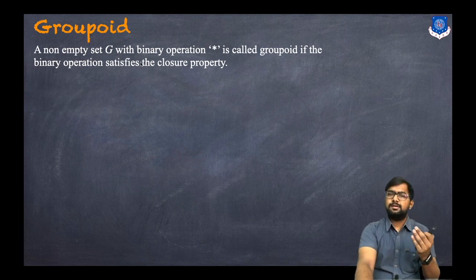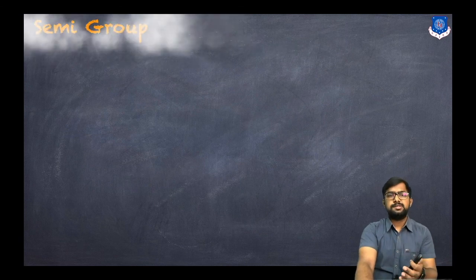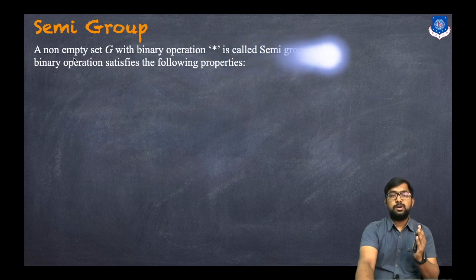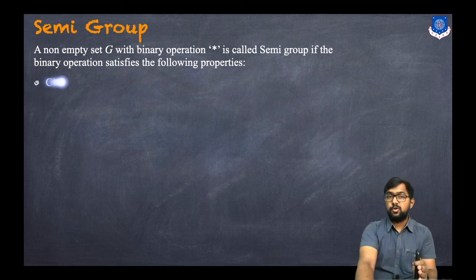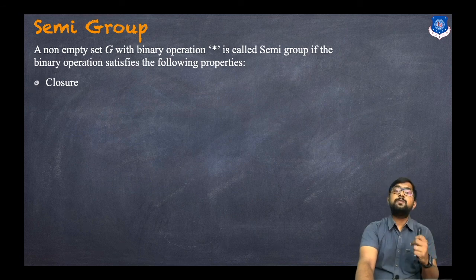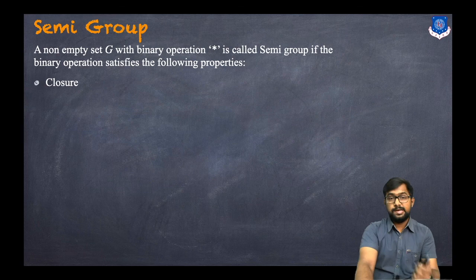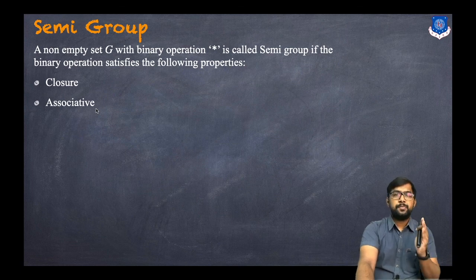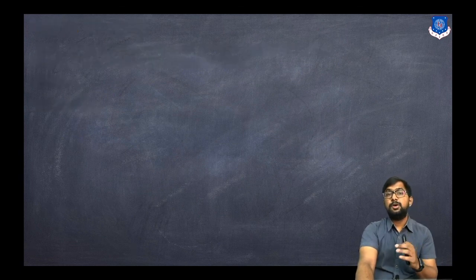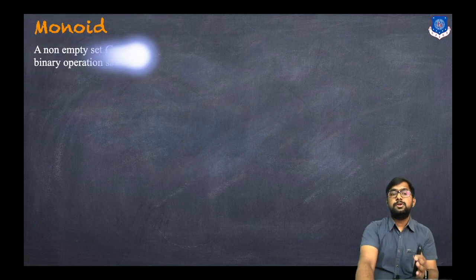The first algebraic structure is the groupoid. A set having only the closure property is called a groupoid. The second one is the semi-group. A non-empty set G with the binary operation star is called a semi-group if the binary operation satisfies the closure property as well as the associative property.